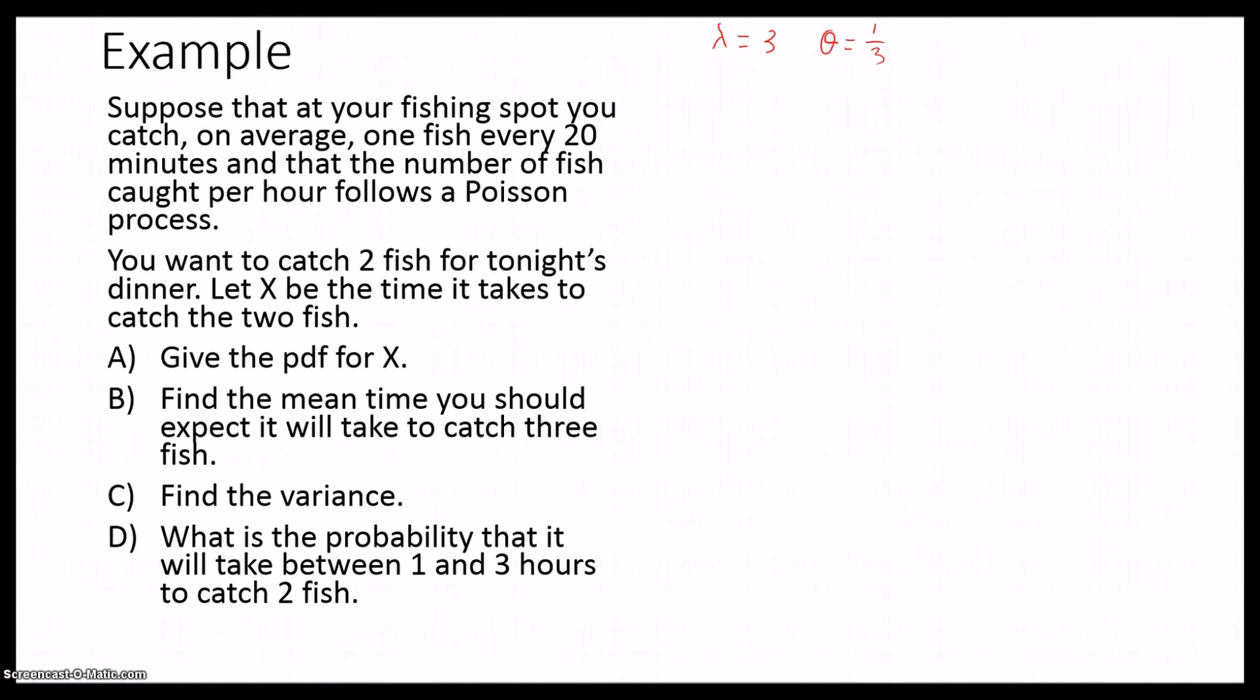So we know that if we're catching a fish every 20 minutes, that means we're catching three per hour. So our Poisson process has a λ of 3. And since θ is 1 over λ, our θ here is 1/3. We're interested in the time to catch two fish. So α is equal to 2.